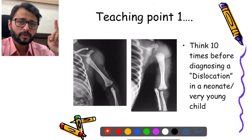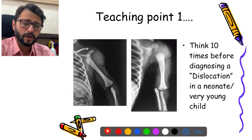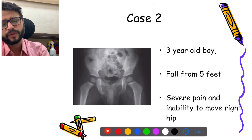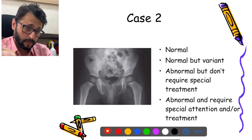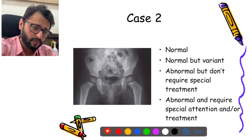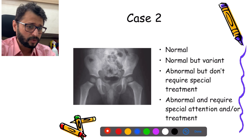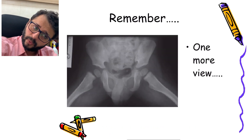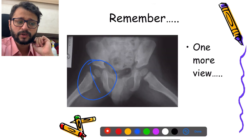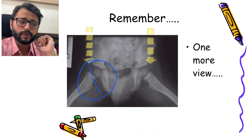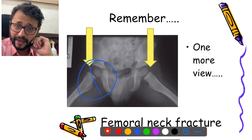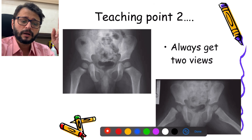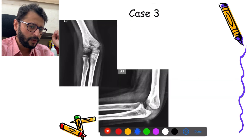Teaching point one: think ten times before diagnosing a dislocation in a neonate or a very young child. Next case: a three-year-old boy with a fall from five feet height, severe pain and inability to move the right hip. This was unfortunately labeled as normal. But you should always get one more view — the second view reveals a cleavage plane showing a Type 1 physial injury of the proximal femur, which is a femoral neck fracture requiring appropriate treatment. Teaching point two: always get a minimum of two views, especially in a traumatic situation.